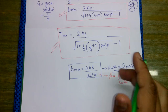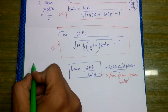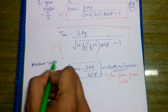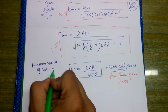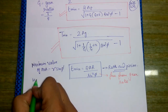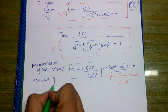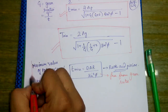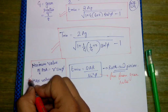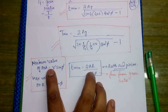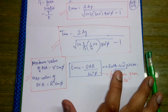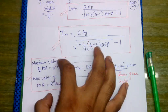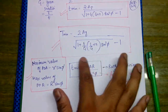Some important note points: the maximum value of path of approach equals small r sin phi, and the maximum value of path of recess equals capital R sin phi. We must remember these formulas because in SSC JE it was asked directly — capital R was given and we had to find the ratio of the maximum value of path of approach to the maximum value of path of recess.